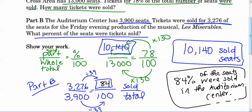So again, set up the same. You're going to have the part that were sold over the total number possible that could have sold, right? So part over whole, the whole amount goes across from 100. So 3,900 is across from 100. To get from 3,900 to 100, you've got to divide by 39. Now that's the same thing you got to do to the top. 3,276 divided by 39 is going to give you 84% or 84 out of 100. So 84% of the seats in the auditorium center were sold.